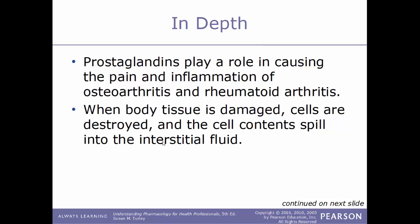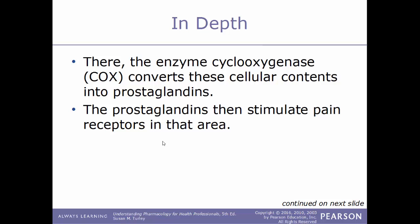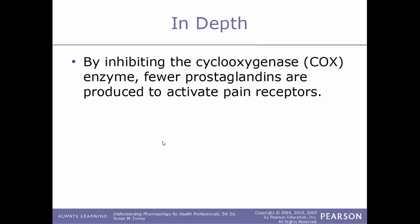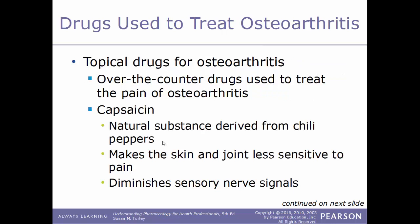When body tissue is damaged, cells are destroyed and their contents spill into the interstitial fluid. The enzyme cyclooxygenase (COX) then converts these cellular contents into prostaglandins, which stimulate pain receptors in that area. The greater the tissue damage, the more prostaglandins are produced and the greater the sensation of pain. Joints have a large number of pain receptors, so joint damage can cause chronic and severe pain. By inhibiting the COX enzyme, fewer prostaglandins are produced and fewer pain receptors are activated.